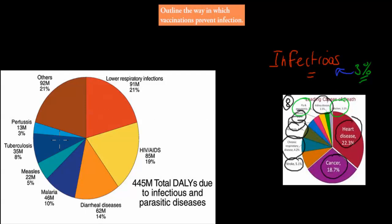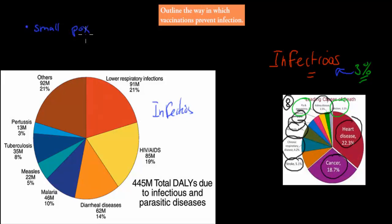This chart shows world deaths from different types of infectious disease. 100 years ago, the main killer was smallpox, which killed a lot of people. Diseases like polio were also really crippling and killing. These diseases were a massive problem about 100 years ago, but now they're not even inside the chart anymore.